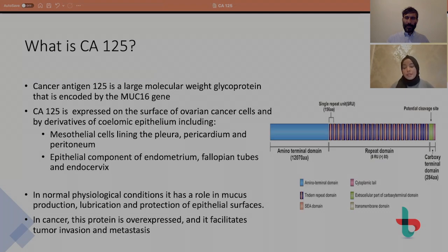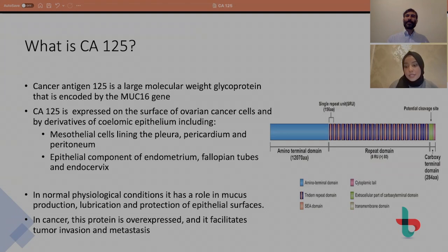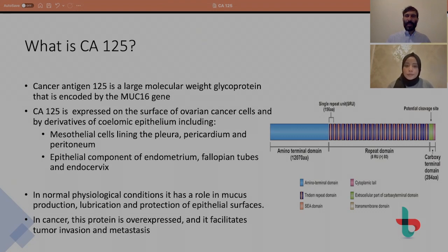By theory, any condition that affects those surfaces or epithelia would result in a raised CA125. In the context of ovarian cancer, CA125 is overexpressed, and this protein has been found to aid local tumor invasion and metastasis by various mechanisms. One mechanism is that it affects immune cells called natural killer cells - by downregulating their response, these cells are less likely to identify and kill cancerous cells, essentially allowing local invasion and progression.